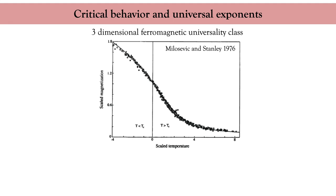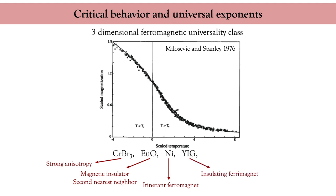A beautiful demonstration of the universal behavior of magnetic materials across Curie temperature was obtained by Milosevic and Stanley in 1976. This graph gathers the reduced magnetization as a function of the reduced temperature for five different magnetic compounds. Here we have chromium bromide which is a magnetic material with strong Ising anisotropy, europium oxide which is a magnetic insulator governed by super exchange, nickel which is an itinerant ferromagnet, yttrium iron garnet which is an insulating ferrimagnet, and finally iron palladium which is a ferromagnetic alloy. Remarkably when one measures the magnetization as a function of the temperature, all these data fall under one curve described by the Heisenberg model irrespective of their different microscopic exchange interactions.